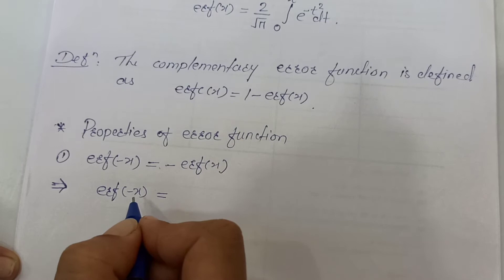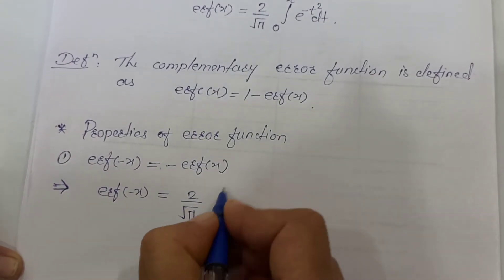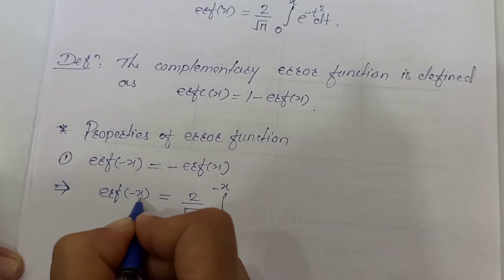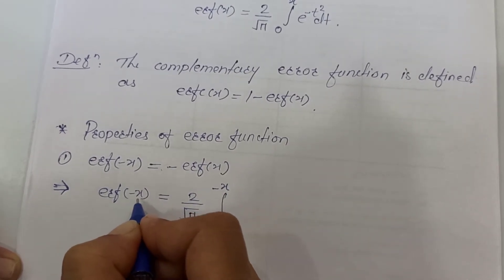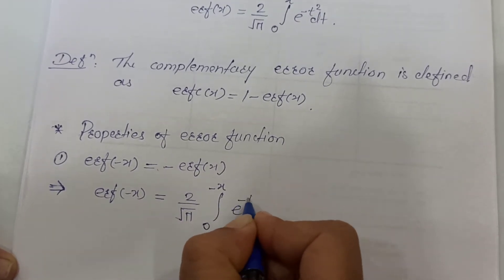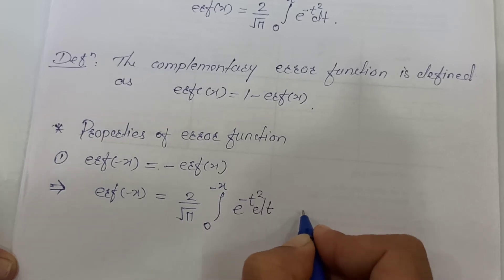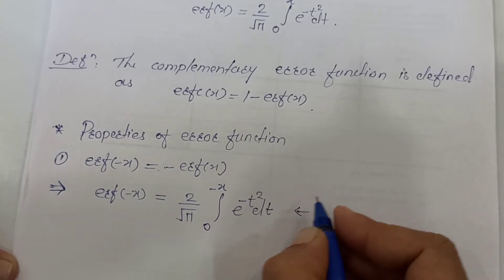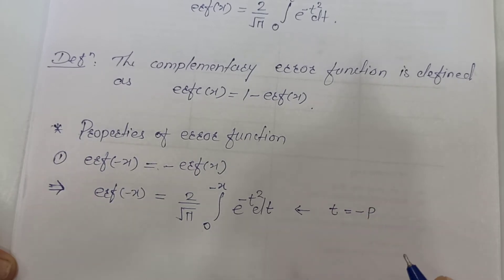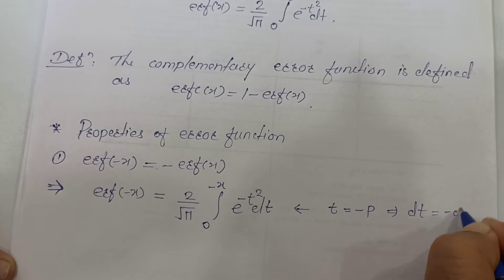Using the definition, it is 2 upon root pi, integration 0 to minus x, e raised to minus t squared dt. Now in this integration, instead of t we will substitute minus of p, so dt becomes minus dp.